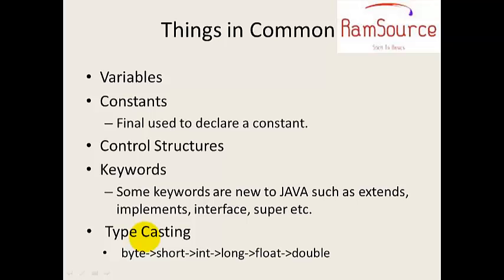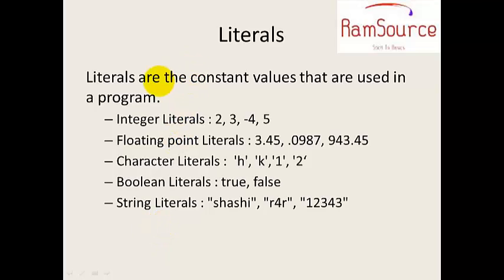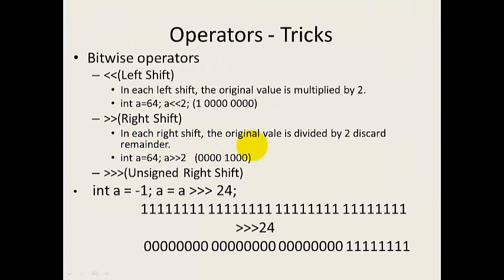Next is literals. Literals are one more form of constants. There are different types of literals: integer literals, floating point literals, character literals, boolean literals, and string literals. Boolean literals are true or false. String literals use double quotes and character literals use single quotes. These are constant values used in a program.